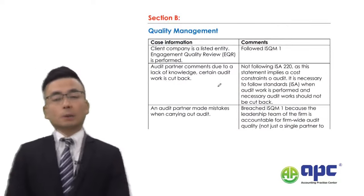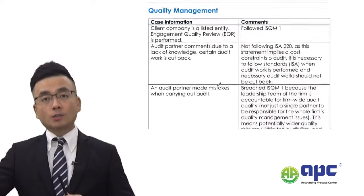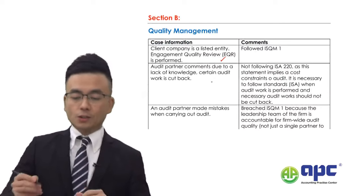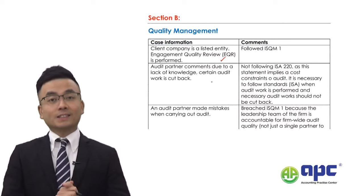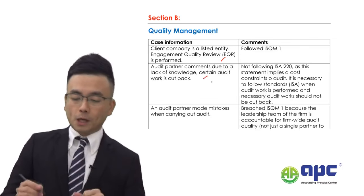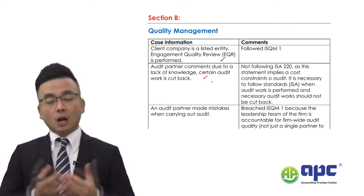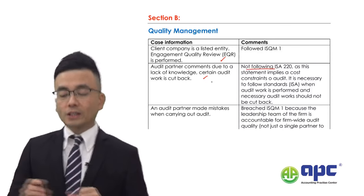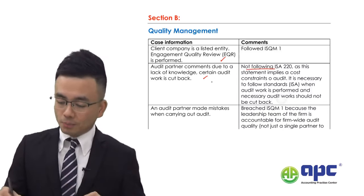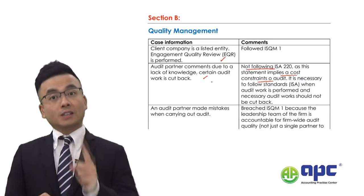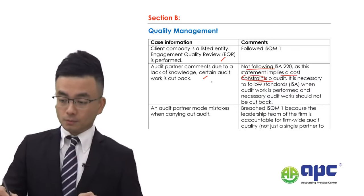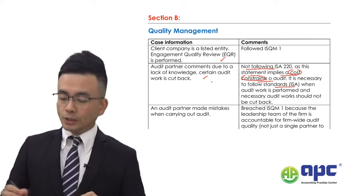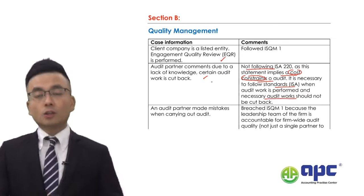In section B, when talking about quality management, I have my own summarised answer format. For example, step 1: the client is a listed entity, or the audit partner's comments show a lack of knowledge. We need to make certain comments regarding quality management failures, such as not following ISA 220. A statement that implies a cost constraint to the audit is important to note. It's necessary to follow the ISA when audit work is performed, and necessary audit work should not be cut back.